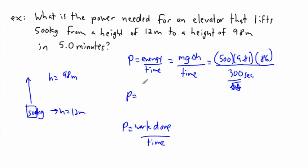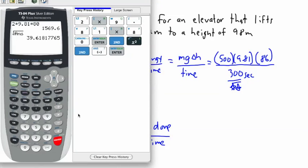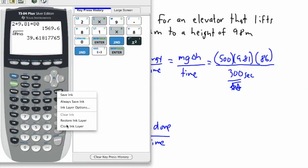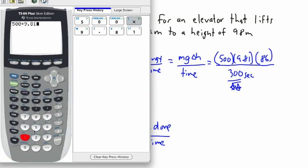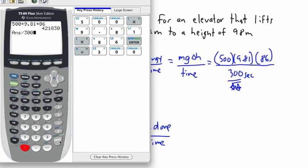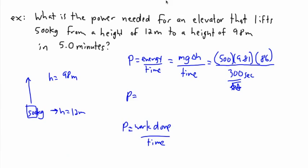Well, then we're going to have our answer of power. We just get out our trusty calculator. And I'm going to consider that. So I'm going to say it is, I better just clear this. So I'll say 500 times 9.81 times 86. I'm going to take that answer and divide it by 300. I end up with an answer of 1,406 watts.